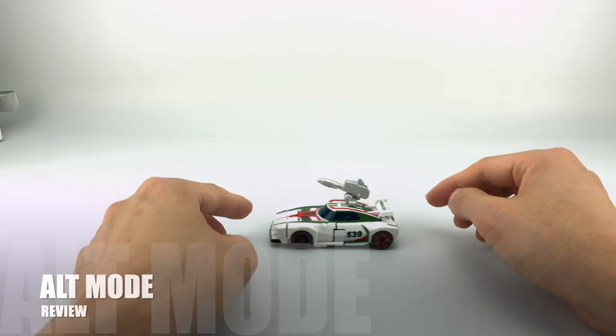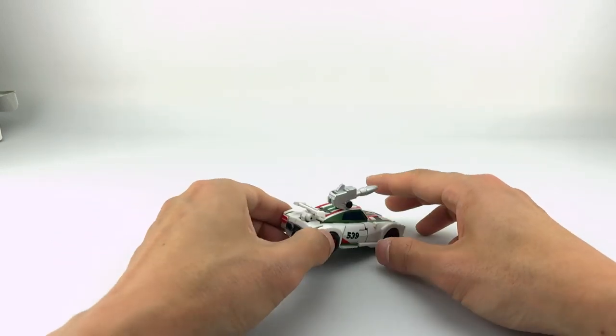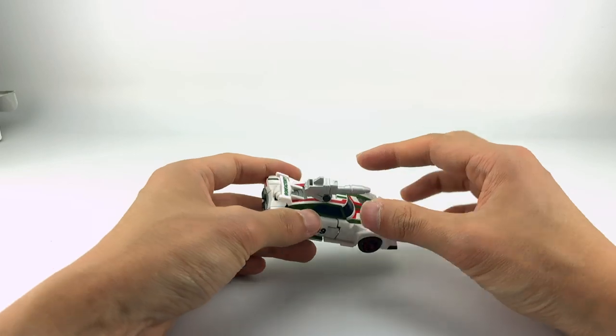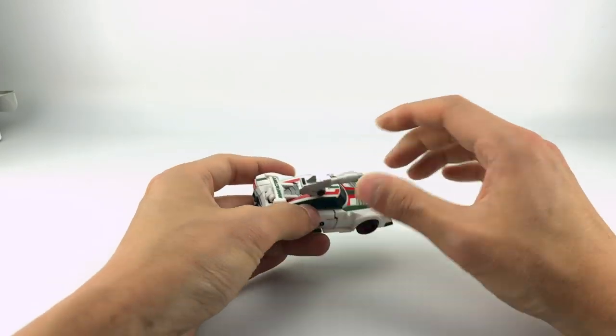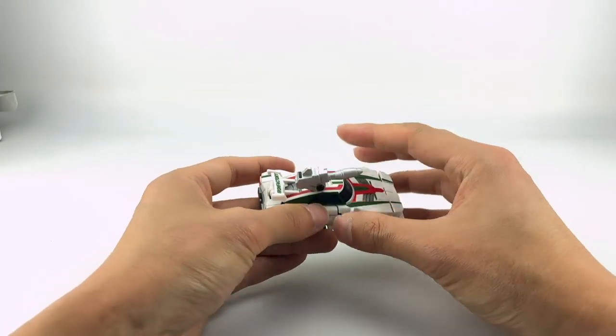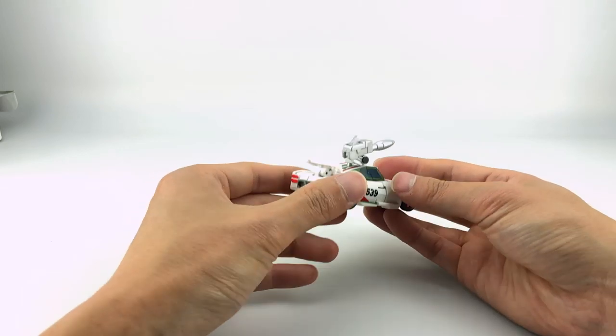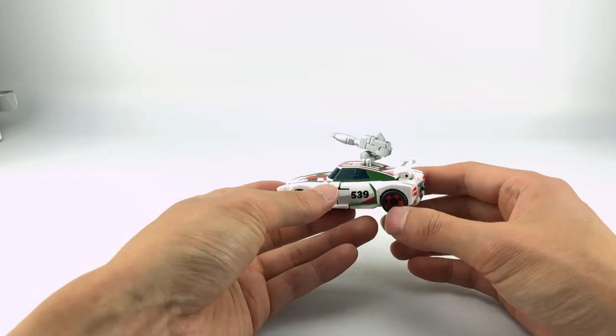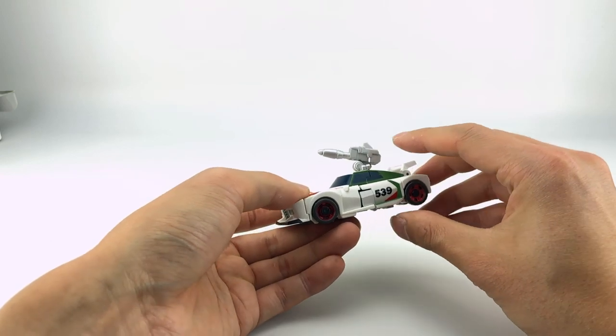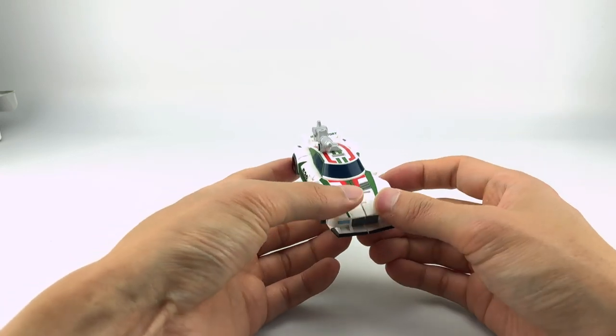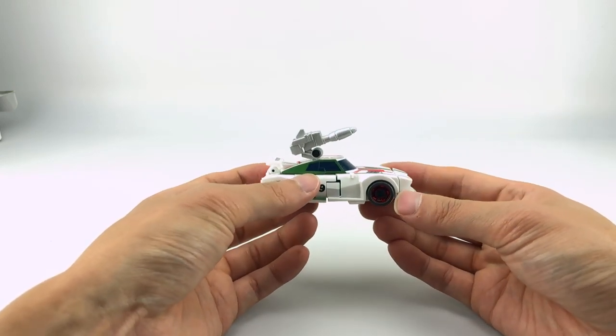And there we have Hex Wrench in alt mode. He does have working wheels. You can see him rolling around like that. He has no real other articulation aside from his weaponry, which you can swing around that way. But nothing else fancy going on here. He does look pretty nice.